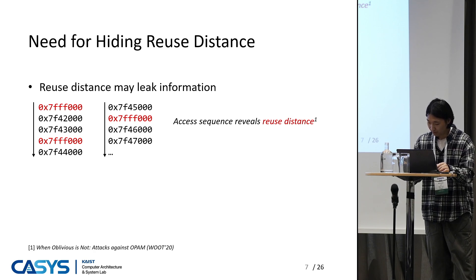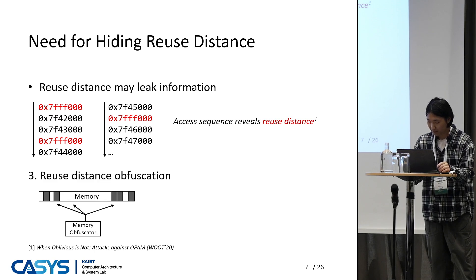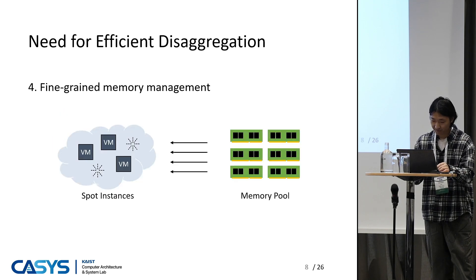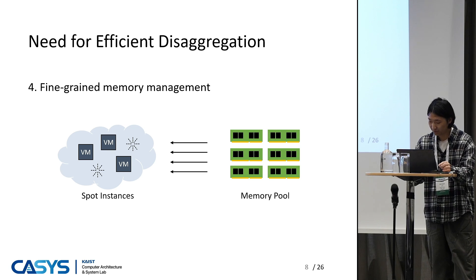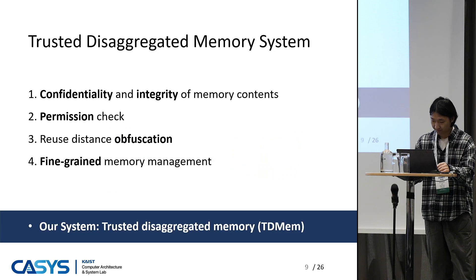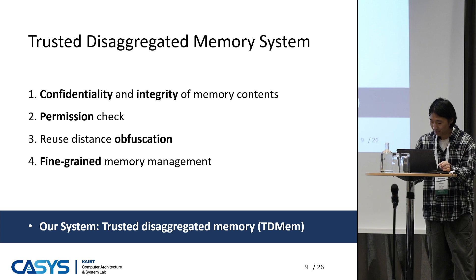To ensure the obliviousness of memory content, there are some studies such as ORAM, which is notably slow. So in this paper, we designed an obfuscator to hide the access patterns. To address the challenge of fluctuating memory demands in cloud scenarios, we assume that the system is using a memory pool. Coarse-grained memory allocation can lead to memory fragmentation, so we decided to manage memory at page granularity. To address these security challenges and efficient disaggregation, we proposed TDMEM, a hardware-based trusted disaggregated memory system.